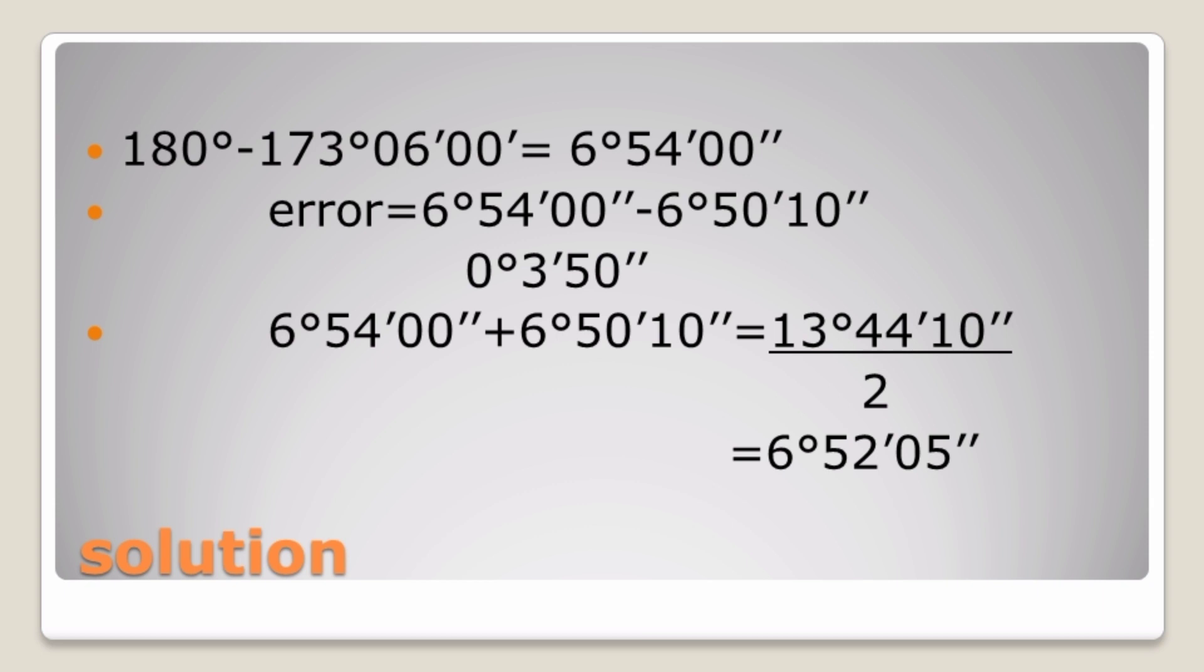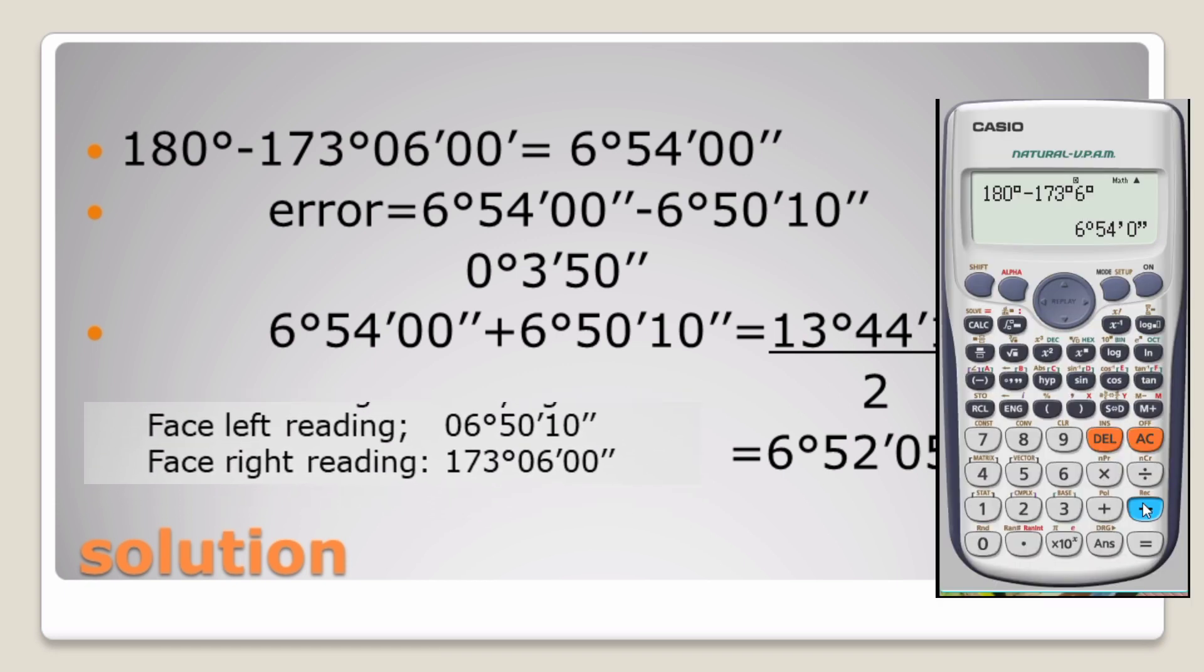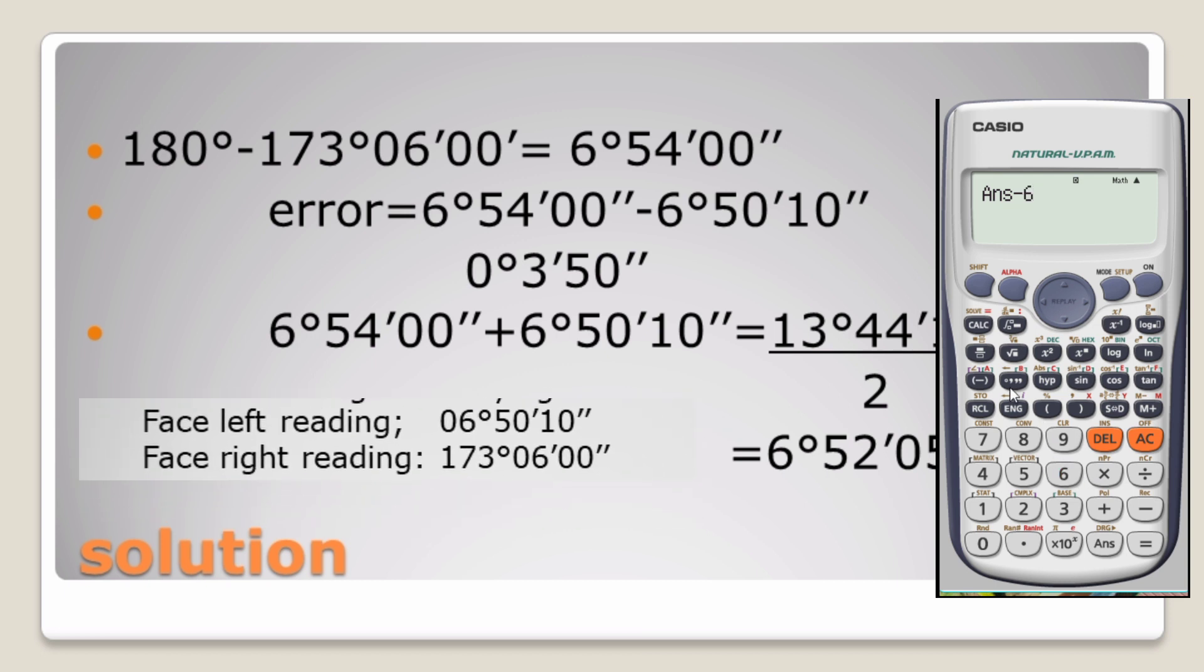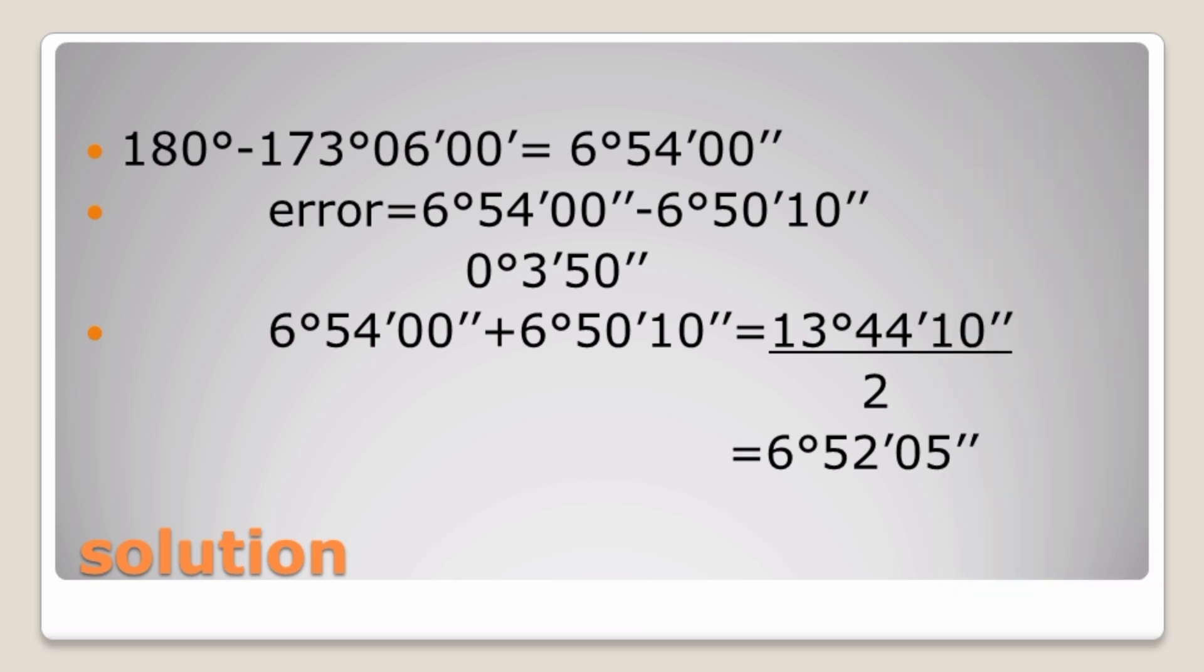In determining the error, we'll subtract that value—that is the correct value that we have gotten—with the one given to us on the equation. So that is 6 degrees 54 minutes 0 seconds minus 6 degrees 50 minutes 10 seconds given to us on the equation, the face left reading. By subtracting that, our error becomes 0 degrees 3 minutes and 50 seconds.